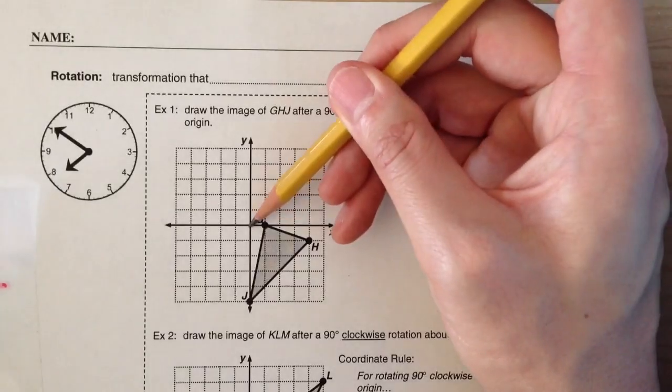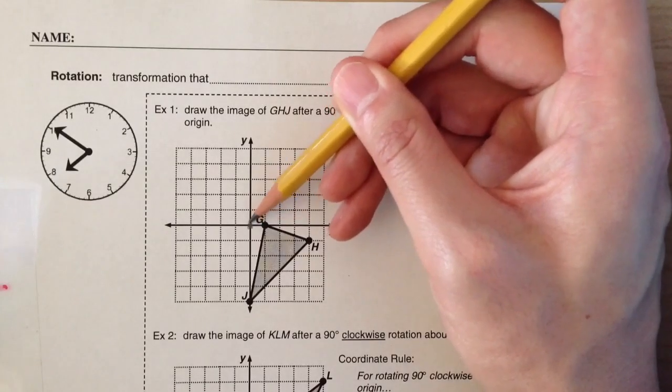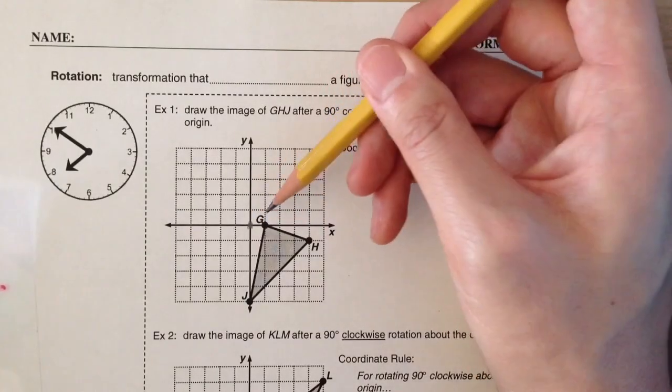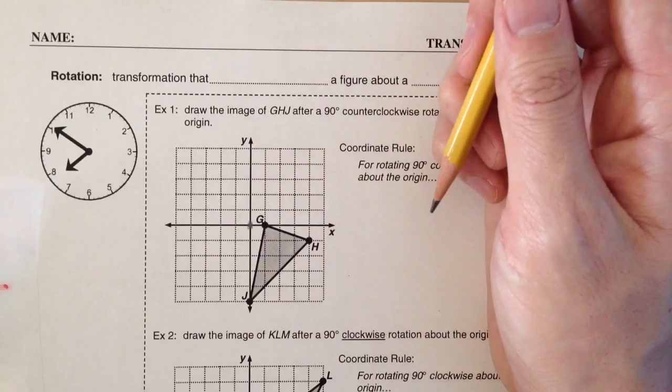That means we're rotating it around this point here. The origin is point zero zero, where the x and y axes intersect.